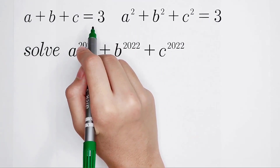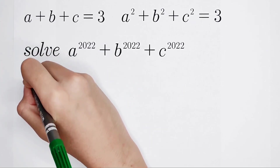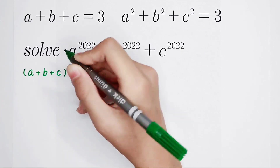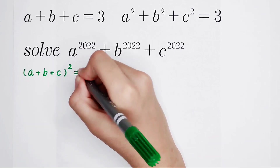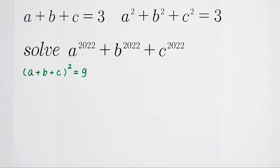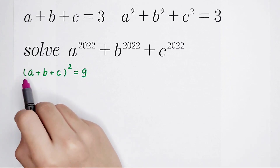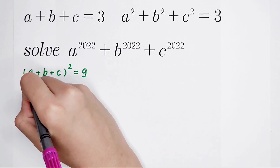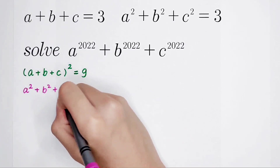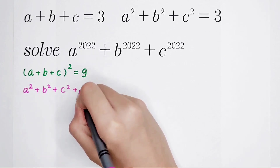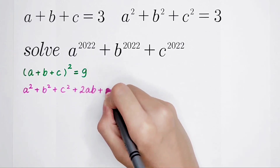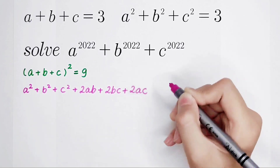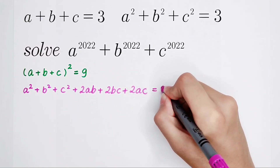We get a squared result on both sides, so we have: A plus B plus C, all squared, is equal to 3 squared, which is 9. Then we use the expansion formula. A plus B plus C, all squared, equals A squared plus B squared plus C squared, plus 2 times AB, plus 2 times BC, plus 2 times AC, equal to 9.